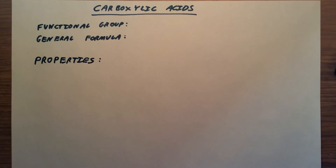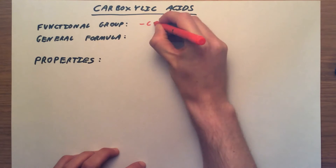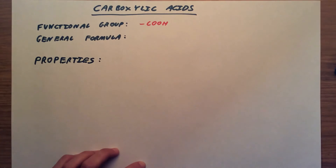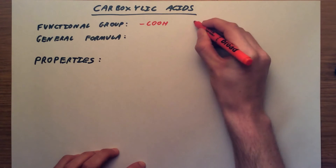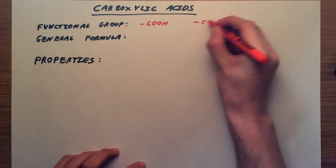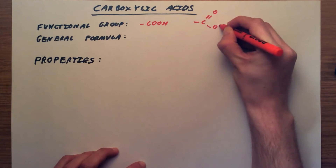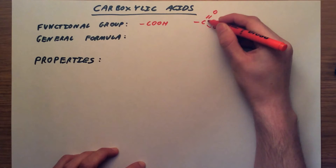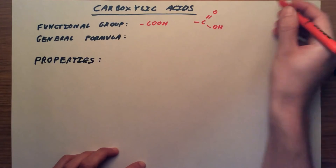Carboxylic acids are organic compounds that have the functional group COOH. There are different ways to represent or show this. Often you will see them drawn out where we have a carbon double bonded to an oxygen and then with a single bond to an OH group.